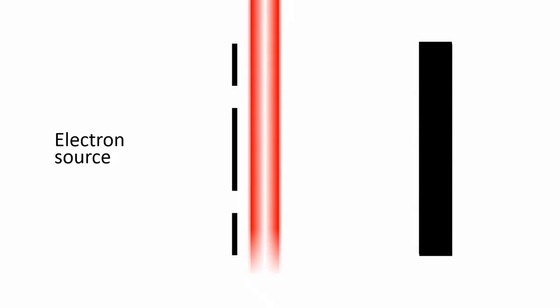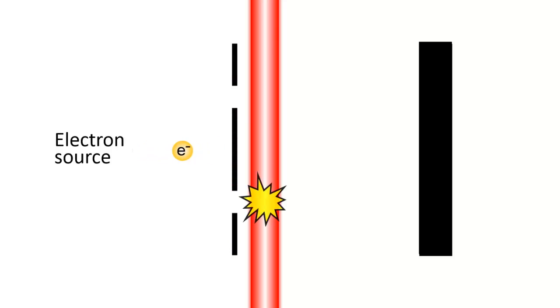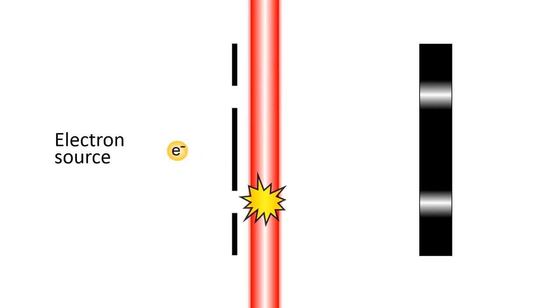And we can test this hypothesis by shining a laser beam directly behind the two slits. When an electron interacts with the laser, it's going to make a tiny flash. If the electron passes through both slits, then we should see two flashes, one directly behind each slit, at the same time. But we don't — only one flash behind only one of the two slits is observed at a time.